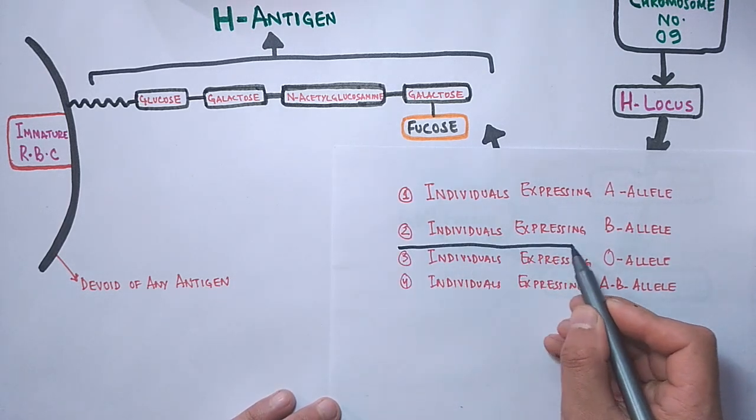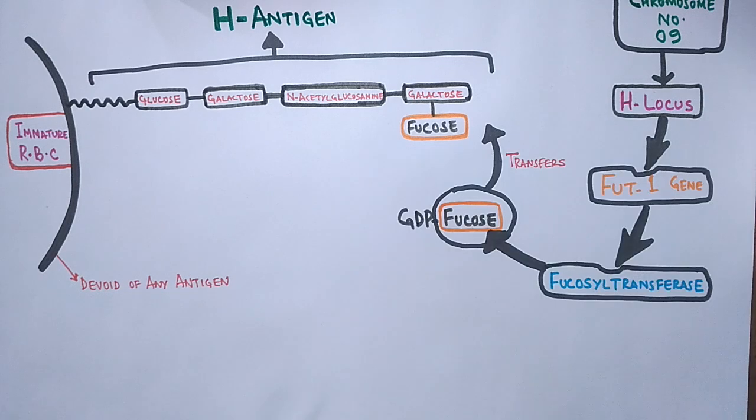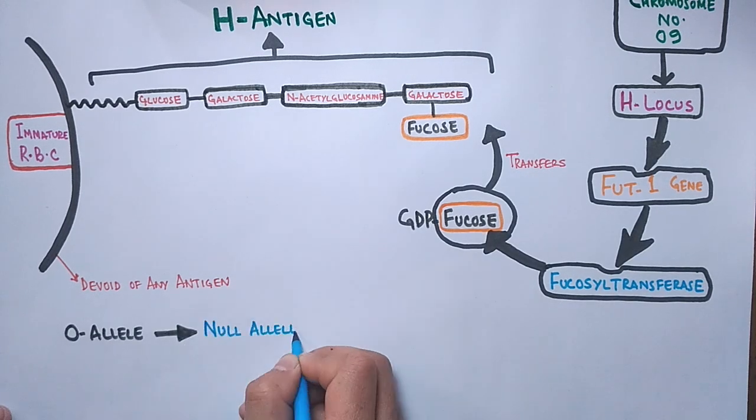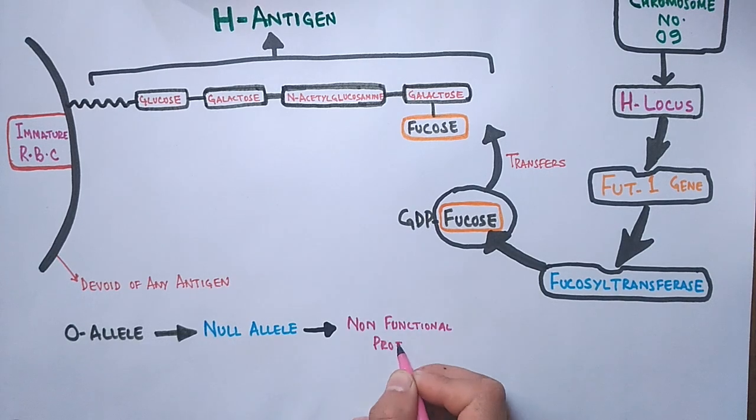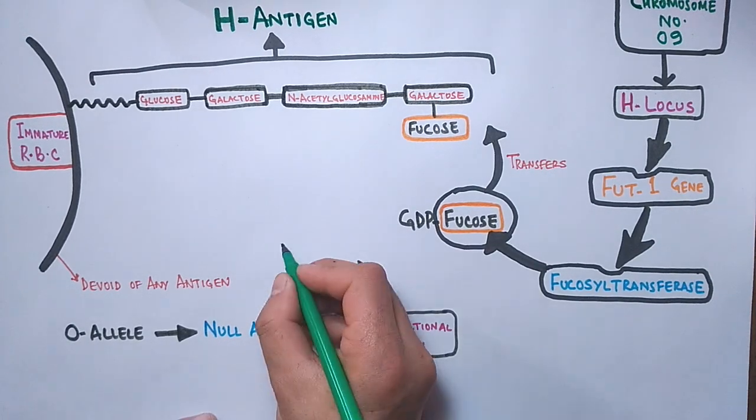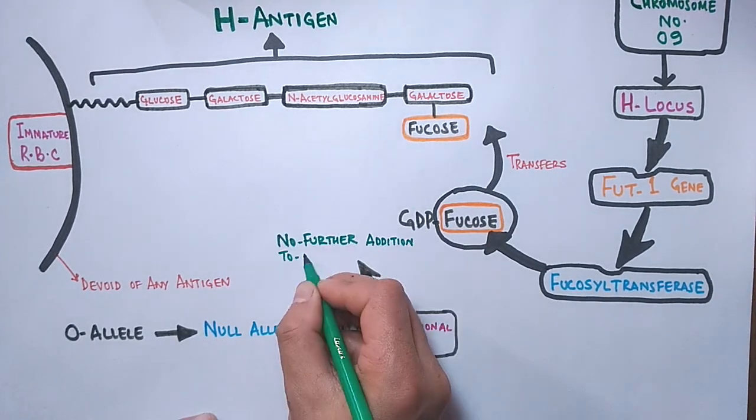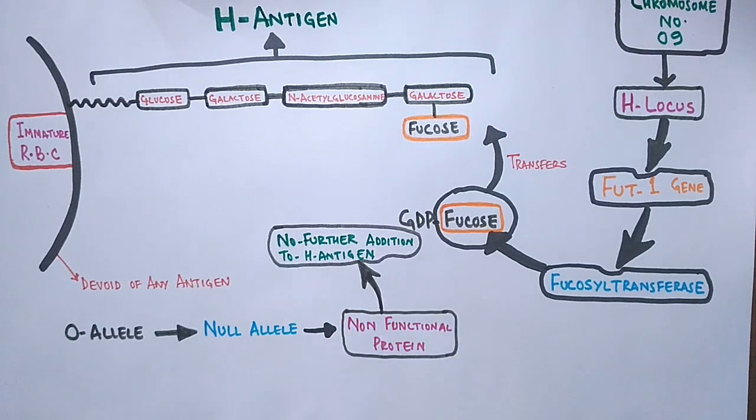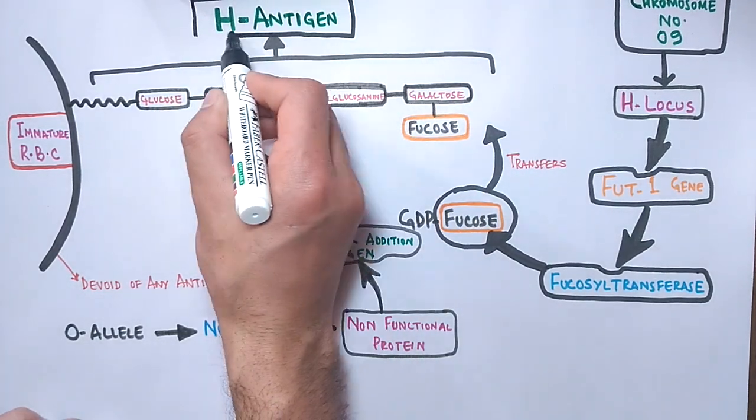Now let's take O individuals first, the individuals with O allele in homozygous condition. This O allele is null allele and it will produce a non-functional protein, and this non-functional protein will not add any molecule to the precursor H antigen. So the H antigen on the surface of RBC remains as such in its form in O blood group individuals.